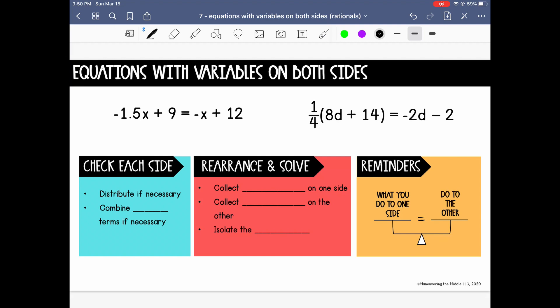So when that happens, there's a few steps that we want to follow. Starting by checking each side to see if there's anything that needs to be distributed, or if there are any like terms on the same side of the equal sign that can be combined. After you've done that, then we can use our inverse operations to rearrange the equation. And what we want to do is collect the variables on one side of the equal sign. Then on the other side, you'll collect all of your constants.